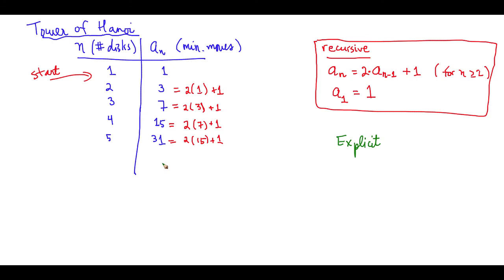So 3 is really close to 4. 3 is really just 4 minus 1. 7 here is really just 8 minus 1. 15 is 16 minus 1. And 31 is really just 32 minus 1. And 1 is, well, 2 minus 1.